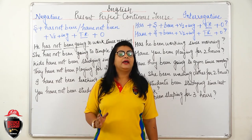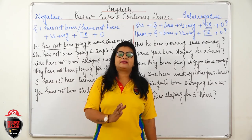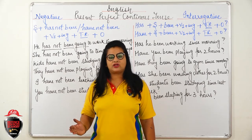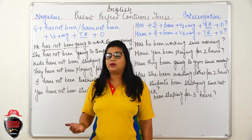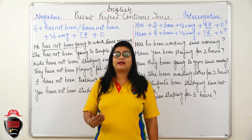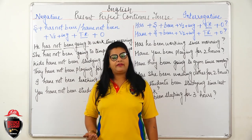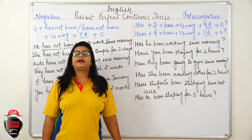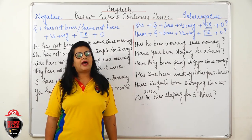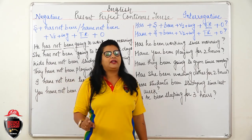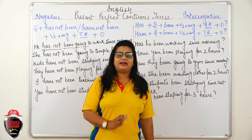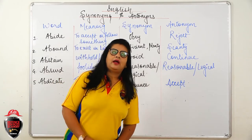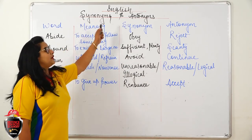So we have completed the present tense segment. We covered: first, Present Indefinite or Present Simple; second, Present Continuous Tense; third, Present Perfect Tense; and fourth, Present Perfect Continuous Tense. Now we will start Past Tense. We are now going to learn Synonyms and Antonyms.